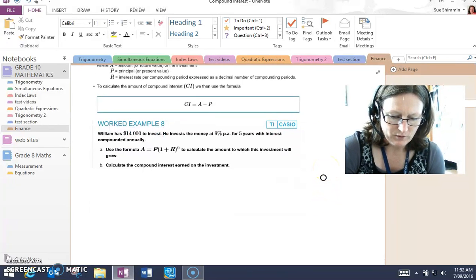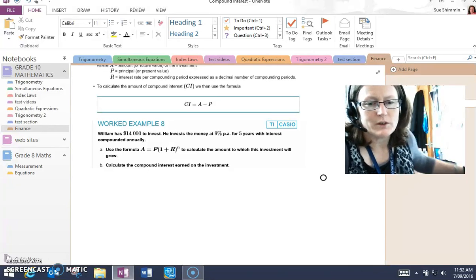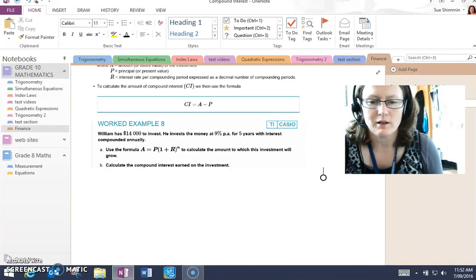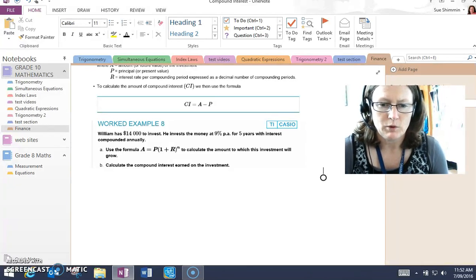William has $14,000 to invest. He invests the money at 9% per annum for five years, and interest is compounded annually.